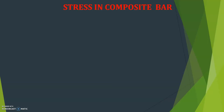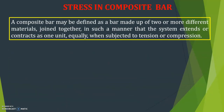What is a composite bar? As the name itself indicates, it is a bar made up of two or more different materials joined together. A composite bar may be defined as a bar made up of two or more different materials joined together in such a manner that the system extends or contracts as one unit equally when subjected to tension or compression.